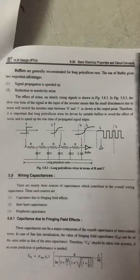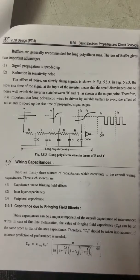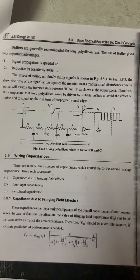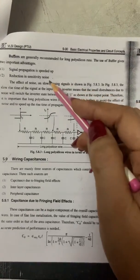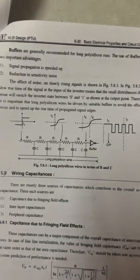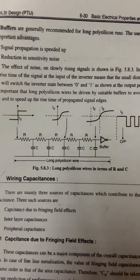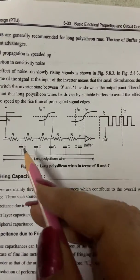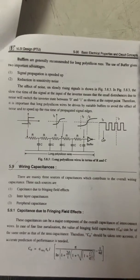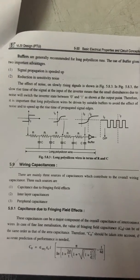Buffers are generally recommended for long polysilicon runs. The use of a buffer gives two advantages: first, signal propagation is speeded up; second, there is a reduction in sensitivity to noise. The diagram shows polysilicon wires modeled in terms of R and C resistance and capacitance, with a buffer connected in the polysilicon wire.